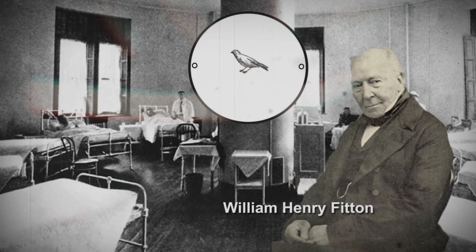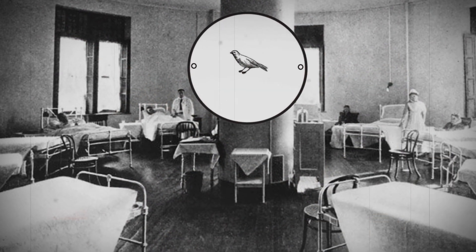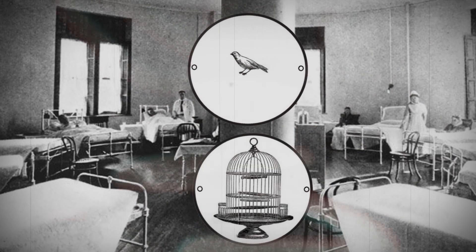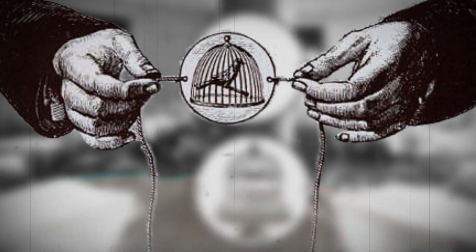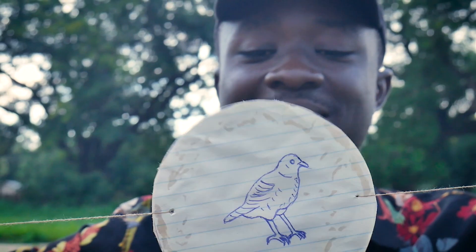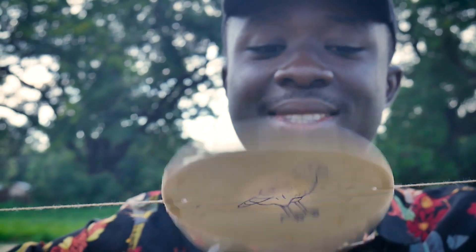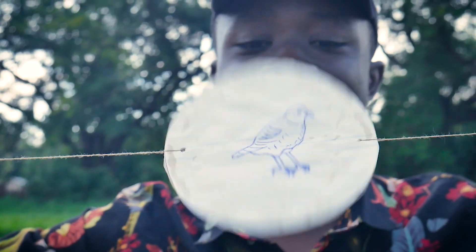How does the thaumatrope work? He took one image, kept it on one side of a disc, took another image and placed it on the other side, twisted it on a rope, and when you spin it, the images seem to blend together.